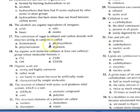Number 17. The conversion of sugar to ethanol and carbon dioxide with enzyme acting as a catalyst is called fermentation. That's a fermentation process. Number 18. An organic acid molecule contains at least one carboxyl group whose molecular formula for the carboxyl group is D, C-O-O-H.